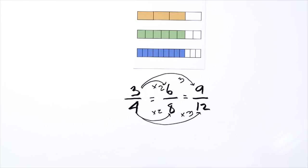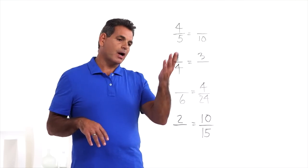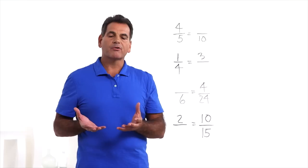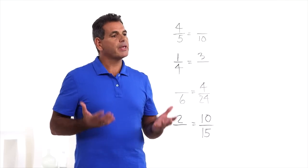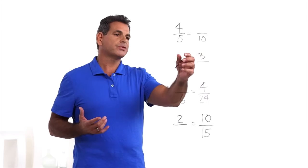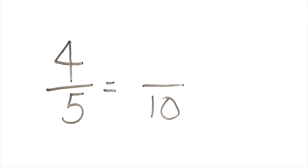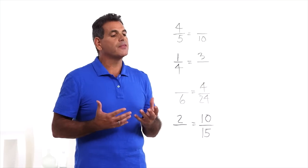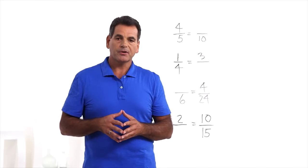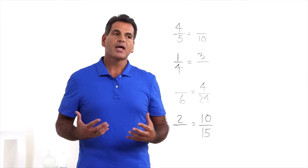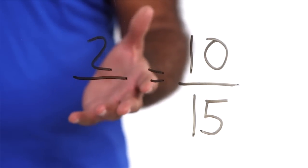The final step is working with fractions without any models. Give students problems like these. Have them write them in their graph paper notebook and try to solve them. They should be able to see that five times two is ten, so they need to multiply four times two to get eight-tenths. After they've done them in their notebook, have them share their solutions with each other and with the class, and make sure everyone is solid with the procedure for finding equivalent fractions.